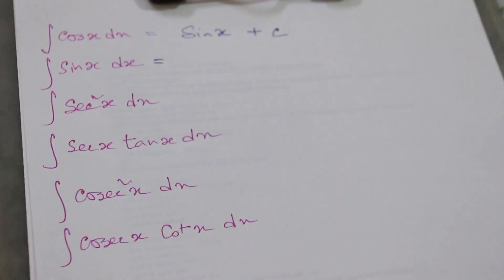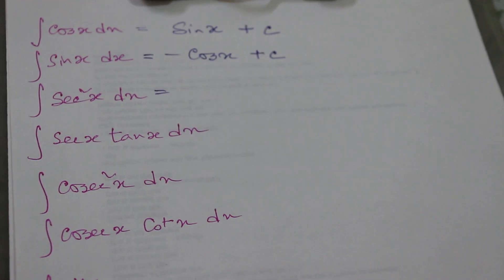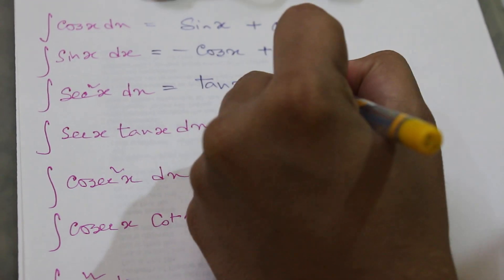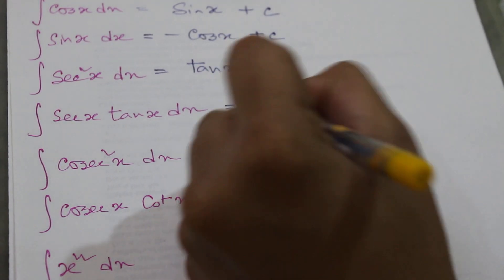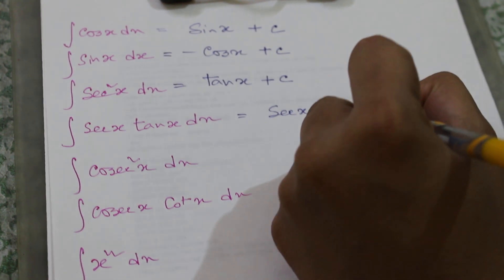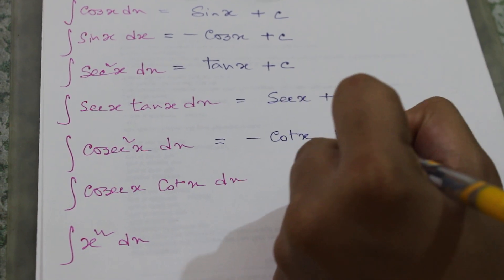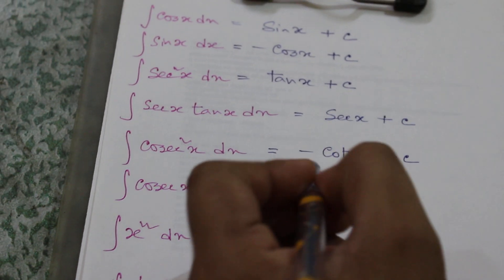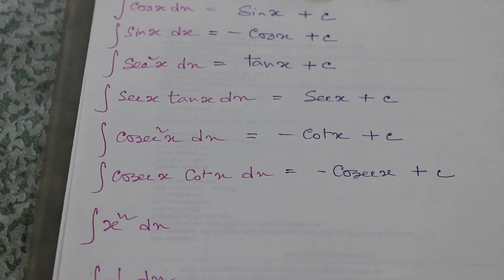Next, integration of sin x will be negative cos x plus c. If we differentiate tan x we get sec squared x, so integration of sec squared x will be tan x plus c. Similarly, integration of sec x tan x will be sec x plus c. Integration of cosec squared x will be negative cot x plus c, and integration of cosec x cot x dx is negative cosec x plus c. These are the integration formulas for trigonometric functions.